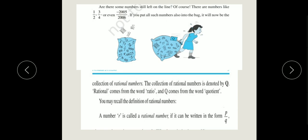Now, are there some numbers still left on the line? Yes or no, friends? Very good. Yes, there are some numbers that still left on the number line. Of course, there are numbers like 1 upon 2, 3 upon 2, or minus 2005 upon 2006, or 5 upon 6, 7 upon 8. These numbers we have not yet collected in our bag. They are still left on the line. So, if you put all such numbers also into the bag, it will now be the collection of rational numbers.